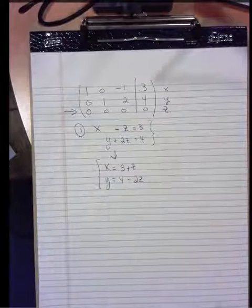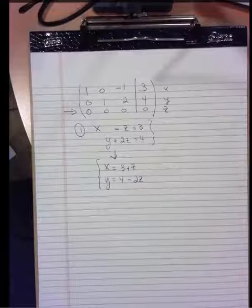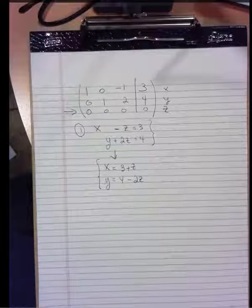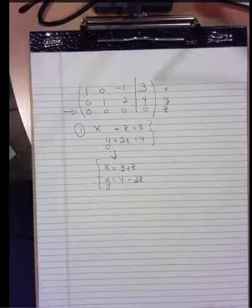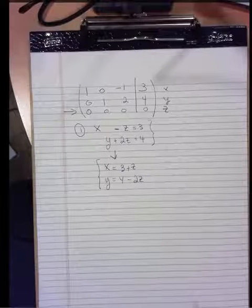So again, no information about z off the bat. But if we could provide a value for z, then x and y are determined. z is now called a free parameter. It can be anything. There's nothing that precludes it from being any particular value. We can pick anything we want for z, and so having done that, x and y are determined.